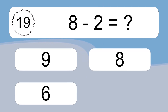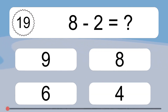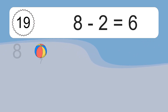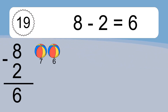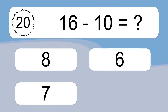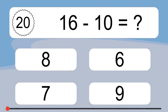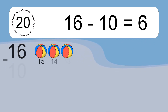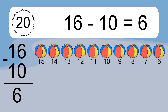8 minus 2 equals what? 8 minus 2 equals 6. Let's count it. 7, 6. 16 minus 10 equals what? 16 minus 10 equals 6. Let's count it. 15, 14, 13, 12, 11, 10, 9, 8, 7, 6.